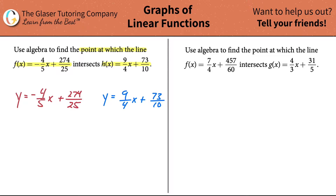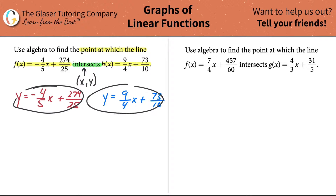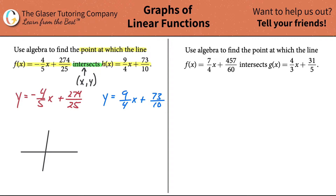We have two equations and we want to find the point at which they intersect. The big key word here is 'the point at which they intersect.' What that means in math is that anytime two lines intersect, they will meet at a common point. Visualize it: you have a red line and a blue line — where they cross is a specific coordinate with some x and some y.